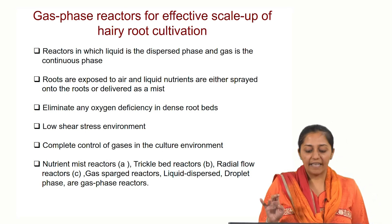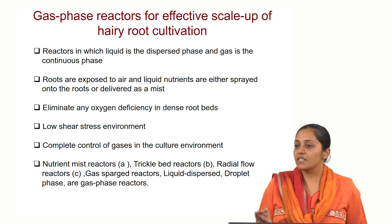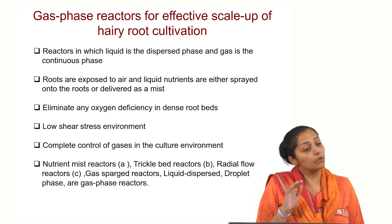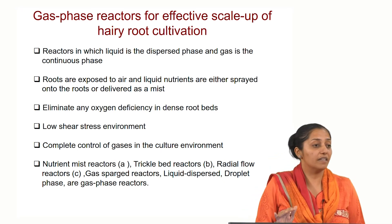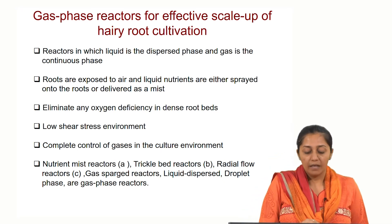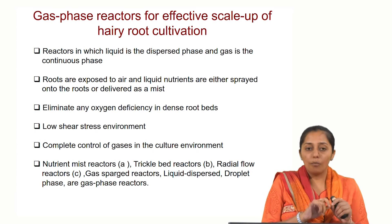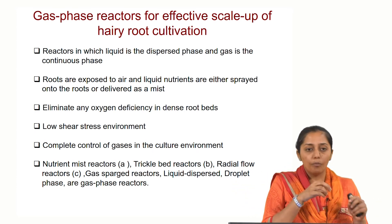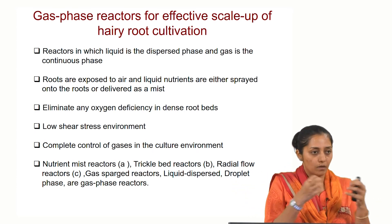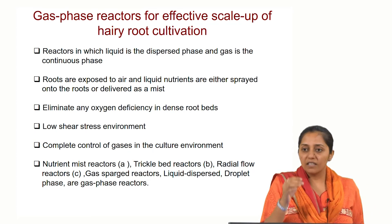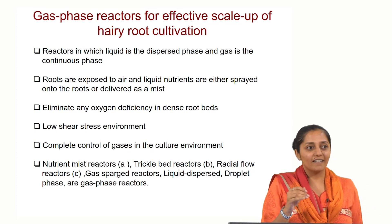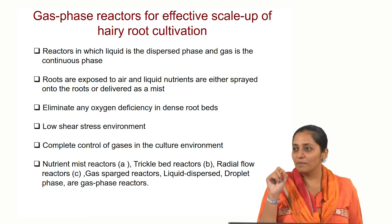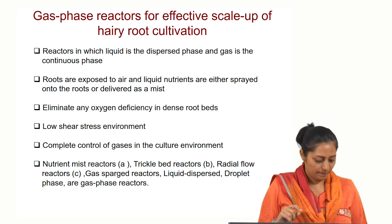Mist bioreactors can eliminate oxygen deficiency in dense root beds, and we could see that very clearly. When we harvested the reactors and opened up the root mesh, we could see that till the inner core there were small fresh branches coming out.